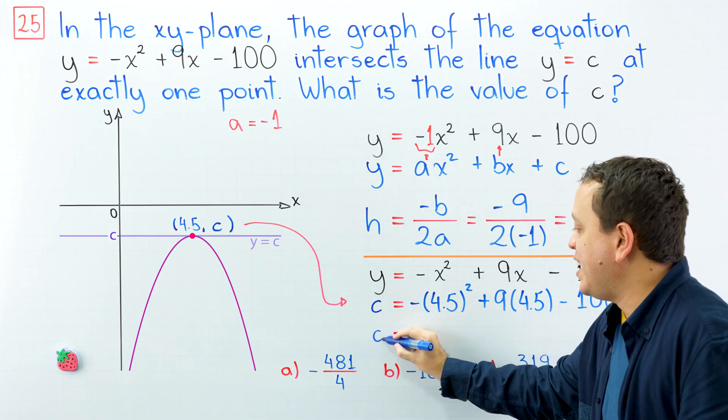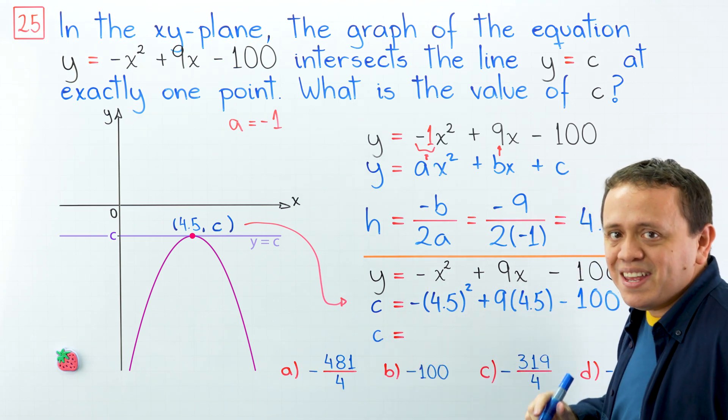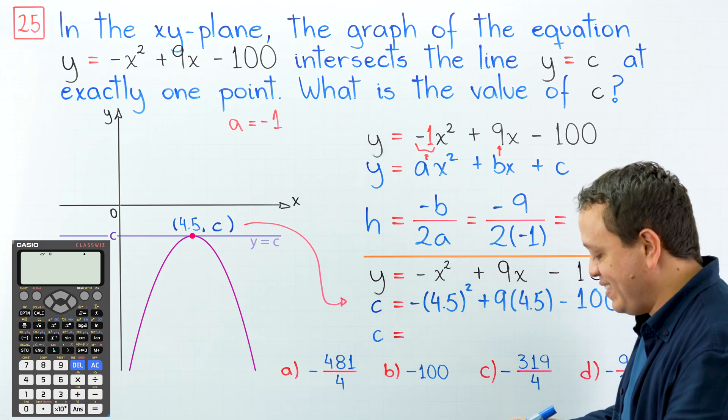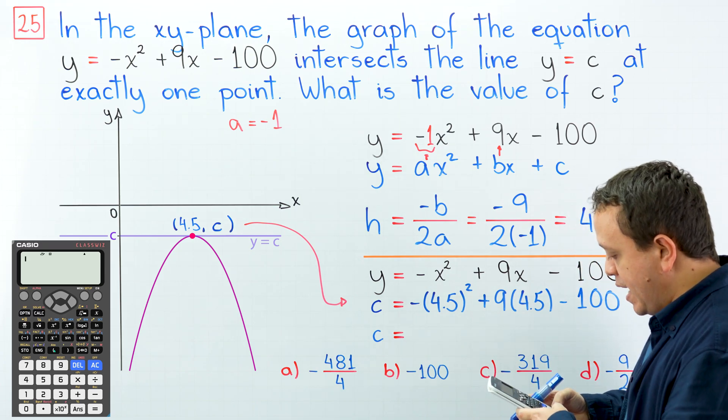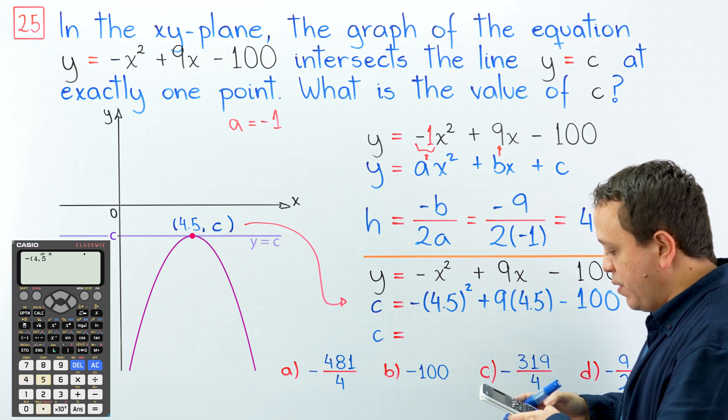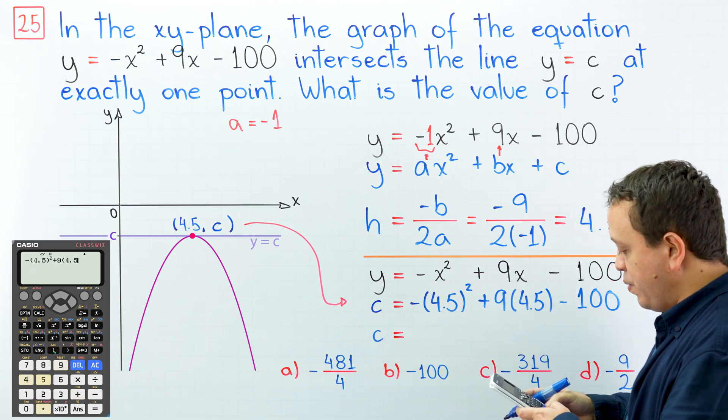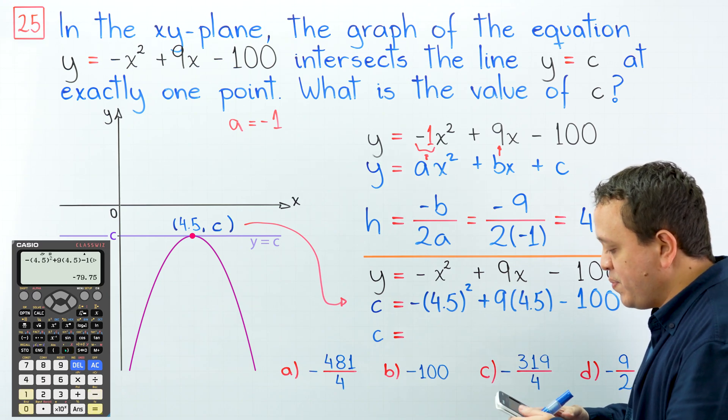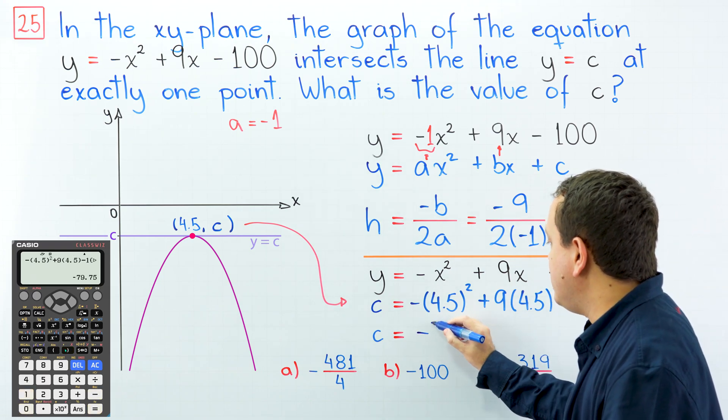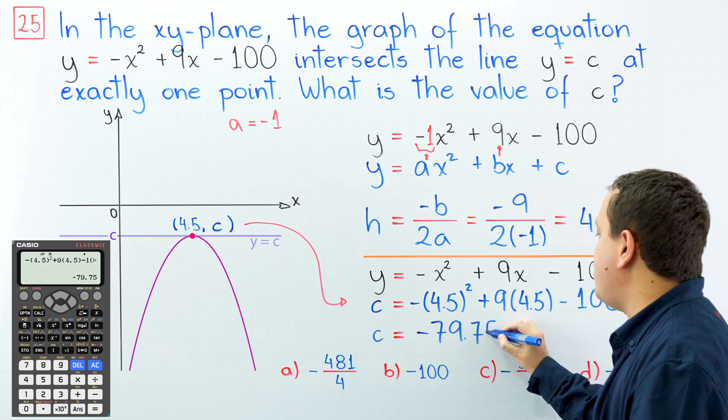Therefore, the value of c is, at this point, we should better use our calculator. So give me a hand with this, please. We have -4.5² + 9 times 4.5, minus 100. And this is equal to negative 79.75.